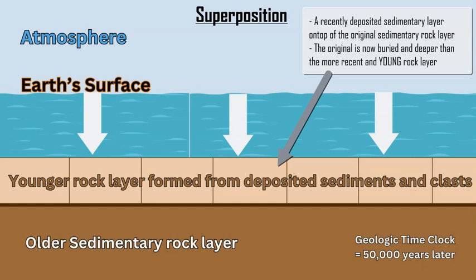Now, 50,000 years later, a new layer of sedimentary rock has been deposited and formed on top of the original. The different colors show the two different rocks. Steno's point is that the recently deposited lighter brown layer is younger in age compared to the older, deeper, original sedimentary rock layer. Over 50,000 years there has been continuous accumulation of sediments deposited by the ocean on top of the original rock.